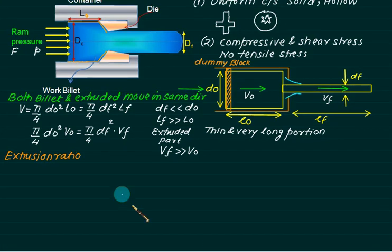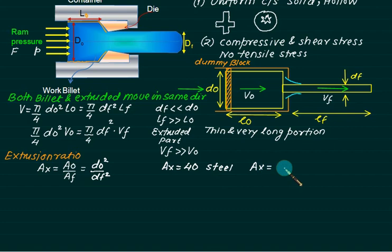One term is called extrusion ratio, written as A0 divided by AF, same as pi by 4 D0 square divided by pi by 4 DF square. Pi by 4 will cancel and you're left with D0 square divided by DF square. Extrusion ratio is very high, around 40 for steel to around 400 for aluminum.